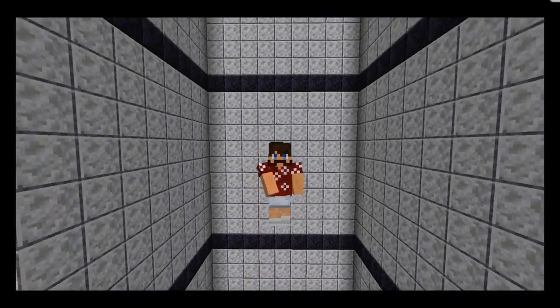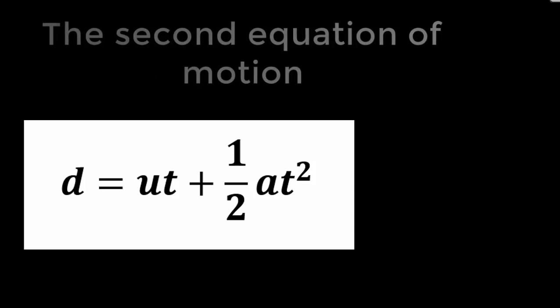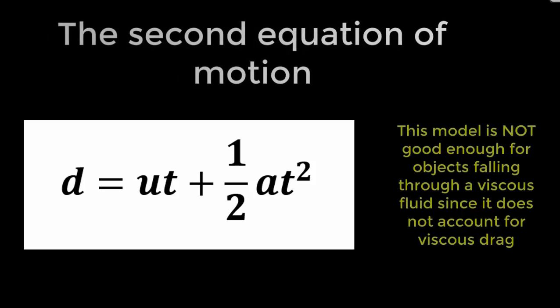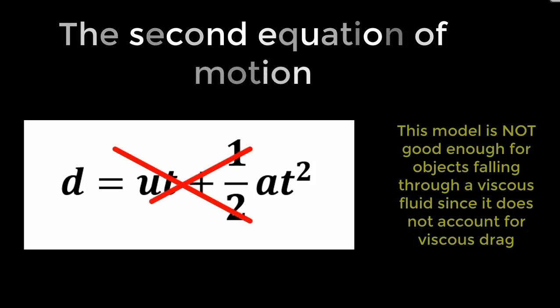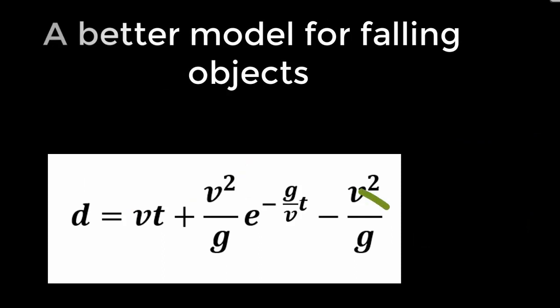In his video, Mike does an experiment using this model, which is commonly known as the second equation of motion, and he actually shows how insufficient this model is, since it does not take into account the effects of viscous drag on the subject. He then suggests a better model, which I am going to explain in this video.